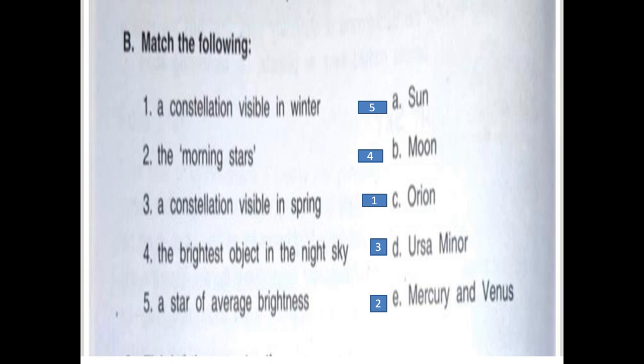Third one, a constellation visible in spring. Answer is Ursa minor. Fourth one, the brightest object in the night sky is moon. And fifth one, a star of average brightness is called sun.